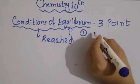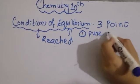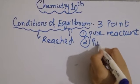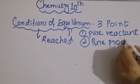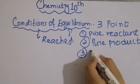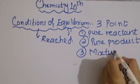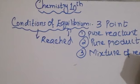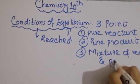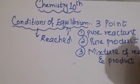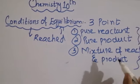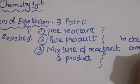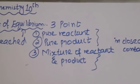The first thing is that we should have pure reactants — the reactant we are using must be pure. Similarly, the product formed will also be pure. We can have a pure reactant and product, or a mixture of reactants and products. This entire process must be carried out in a closed container. When this condition is fulfilled, we say that the reaction has reached equilibrium.